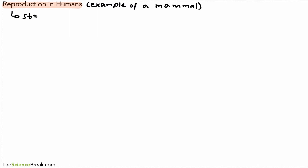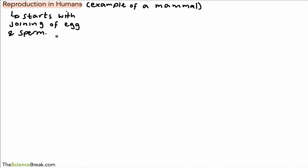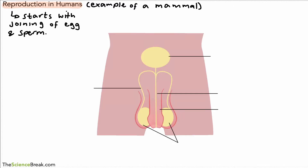You could argue that the start point of reproduction is the joining of an egg cell and a sperm cell. To see how this happens, let's start by looking at the male reproductive system.